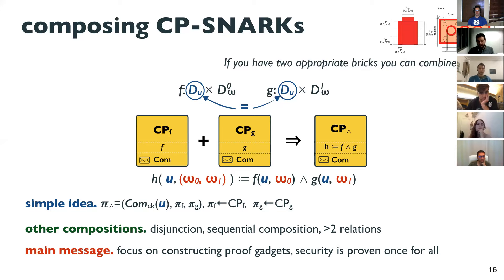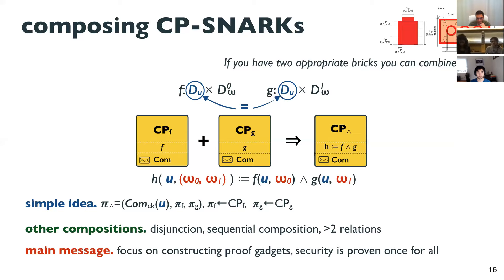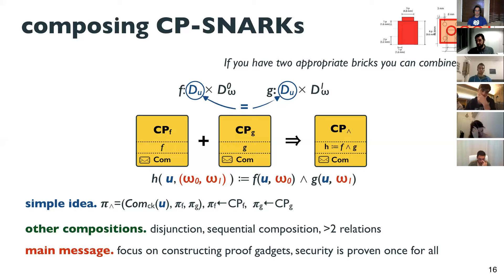We formalize this into a very general composition statement. In particular, once you have this composition theorem, the only thing you have to worry about is composing relations — then you get the combined CP-SNARK in a semi-automatic way. The paper also gives other compositions like disjunction and sequential composition for more than two relations. The main message is that once you have these generic results, the focus shifts to constructing simple proof gadgets and proving security for each one individually.